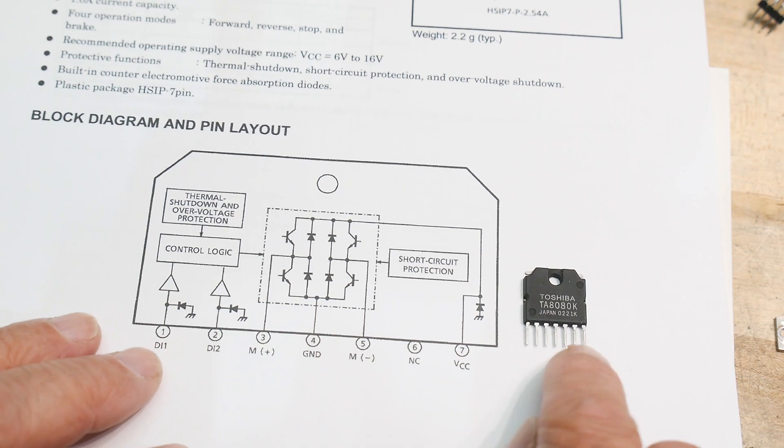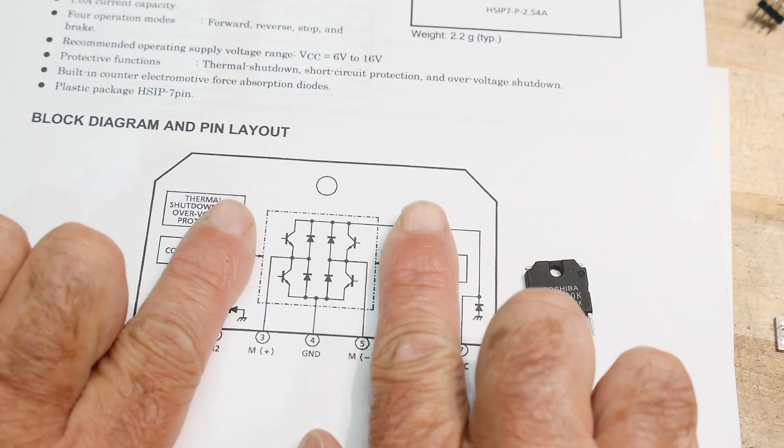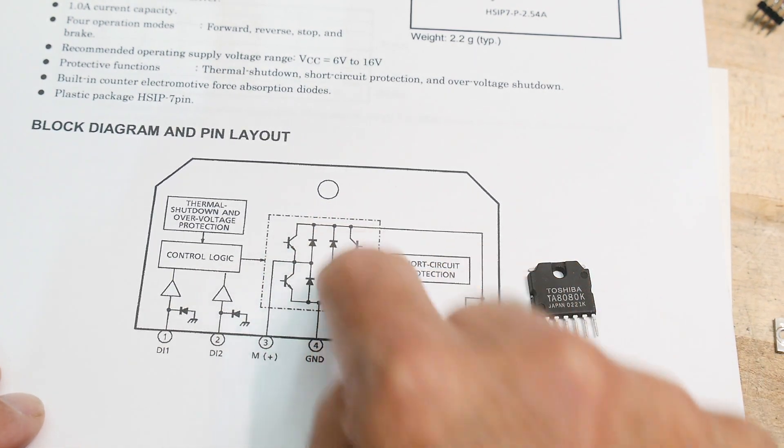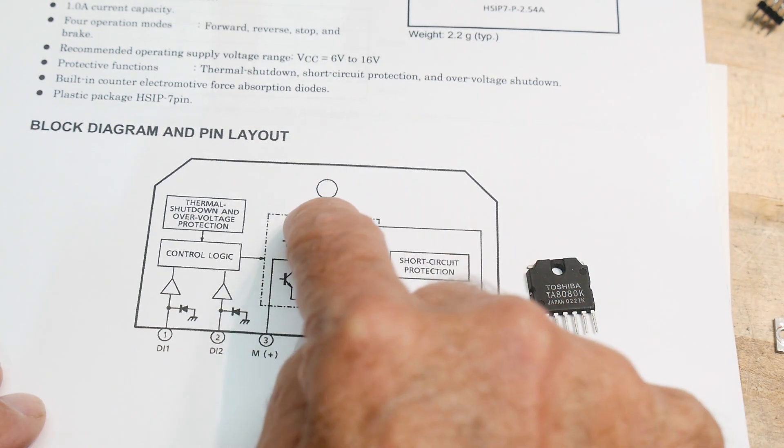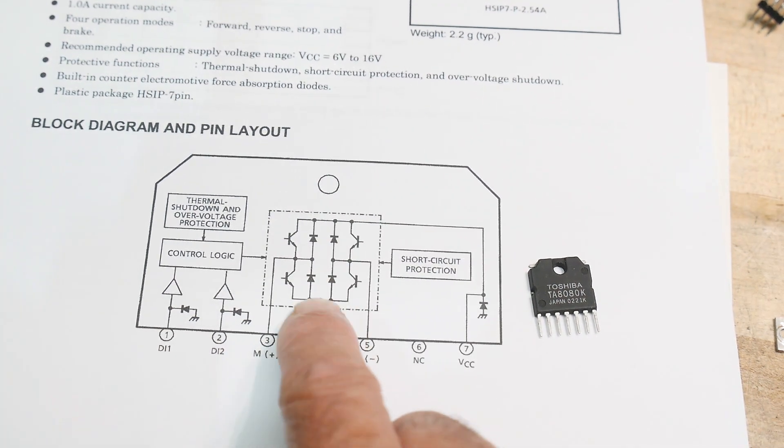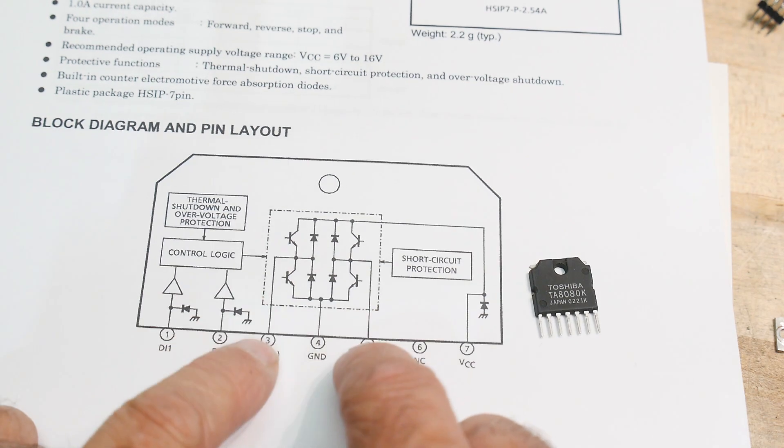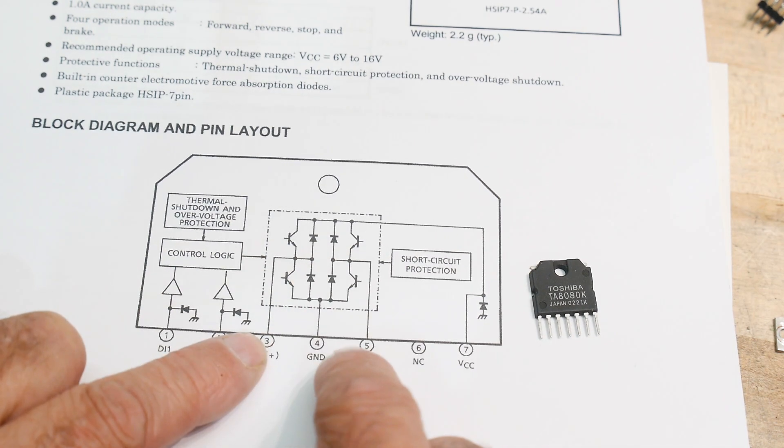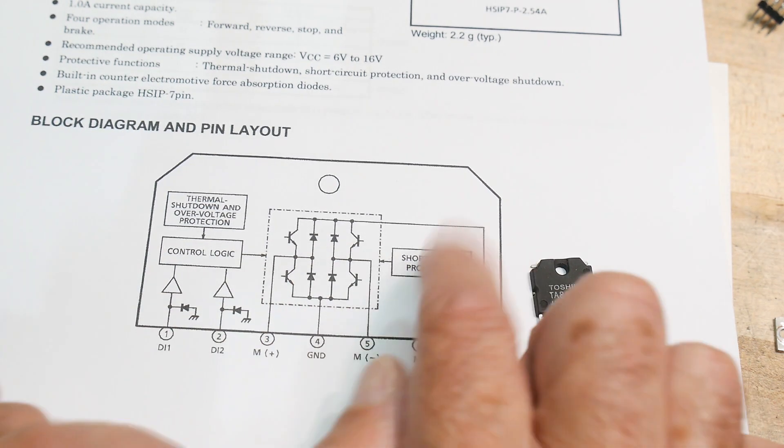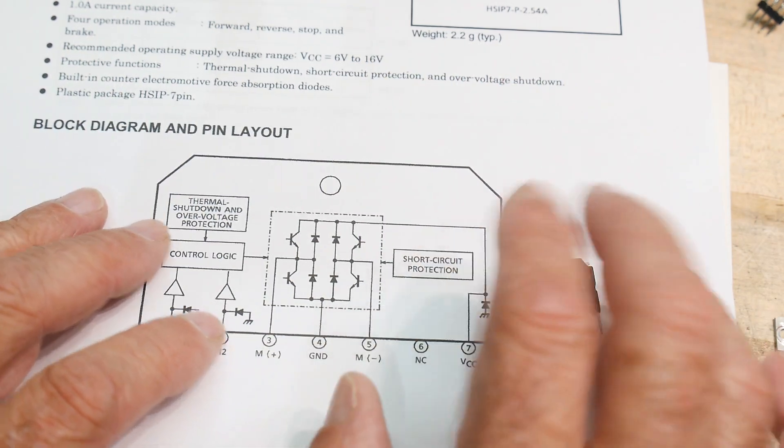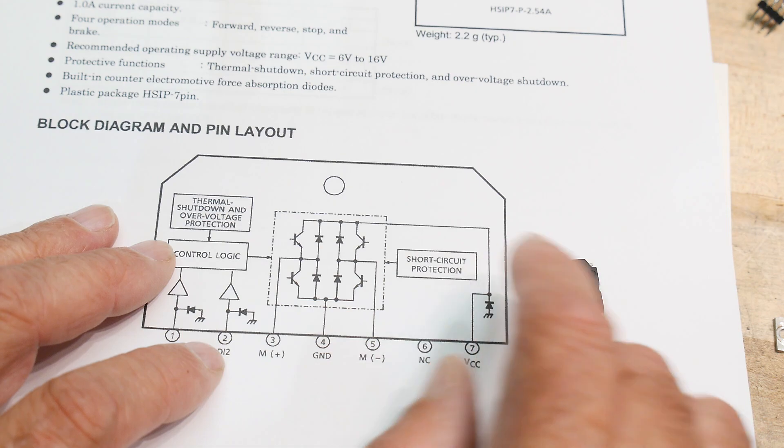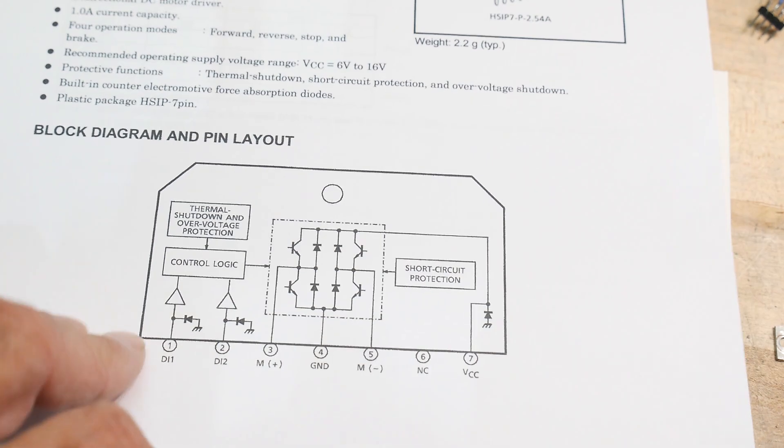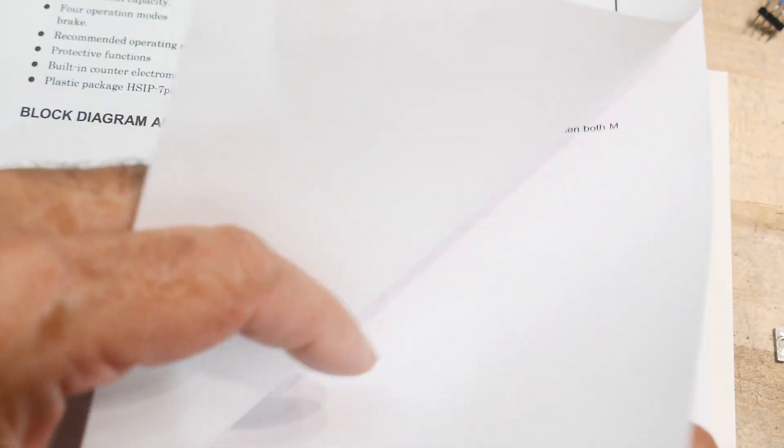So here's the H bridge. You have the positive coming from here and you got the negative coming from here, ground, and then the motor goes across these two. So it's not exactly an H shape here but it is an H, so the motor goes there. It does have some short circuit protection so it won't melt down if things get shorted out in the motor, and it has some reverse polarity protection too if you hook up VCC wrong.